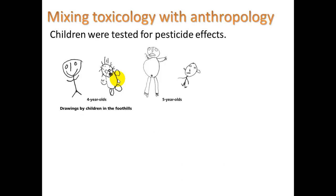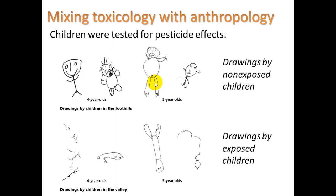Children were tested for pesticide effects. In an area of Mexico, students living in the foothills are generally not exposed to insecticides being used there, and their drawings are pretty typical for four- and five-year-olds. Then in the valley not far away, where there's a greater amount of pesticide runoff getting into the water supply, drawings by exposed children of the same ages show a clear difference in their neurological development. This was a striking case study.